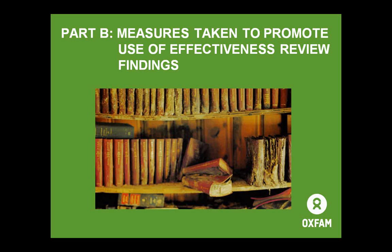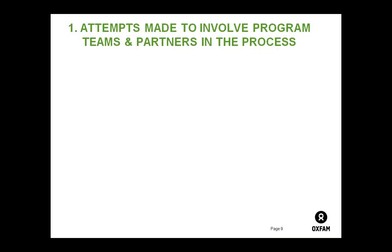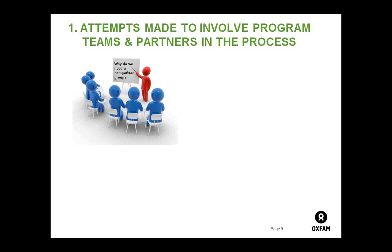Now I want to talk about what we've put in place to ensure use of the findings of these effectiveness reviews. We don't want them sitting on the shelf collecting dust. One of the key things, recognized in the evaluation use literature, is to make sure key people are involved in the process right from the start. So even though programs are randomly selected and have no choice to participate, we still try to involve program teams and partners in the whole process. This includes some light training and orientation on why we need a comparison group and different approaches to causal inference.